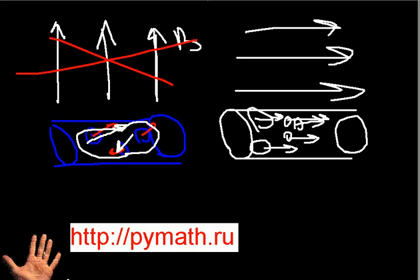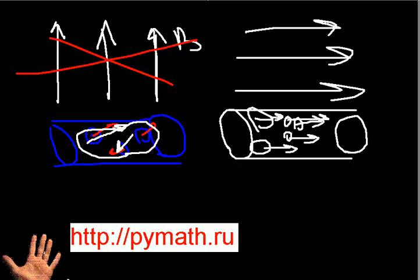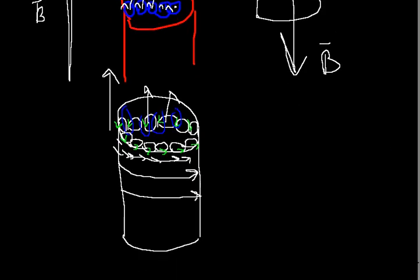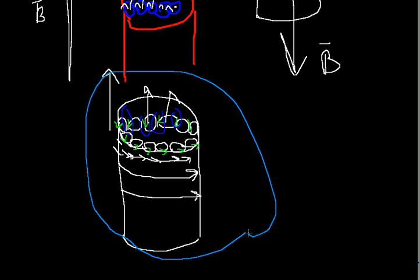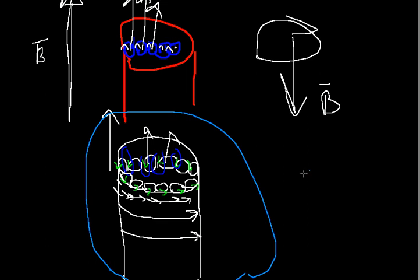This video lesson has a single goal: to show you that the net current on the surface of the magnet can be given as the sum of the currents of every individual contour.